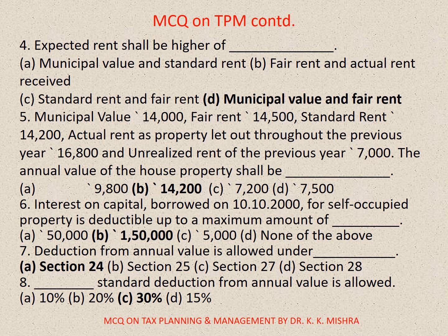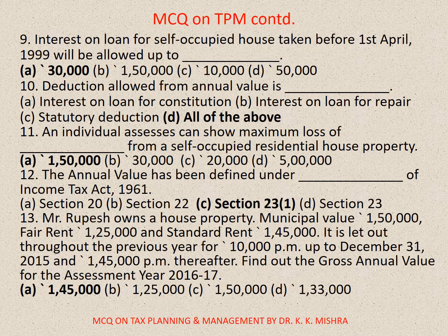Question number 8: Standard deduction from annual value is allowed at — correct option is C: 30%. Question number 9: Interest on loan for self-occupied house taken before 1st April 1999 will be allowed up to — correct option is A: 30,000.